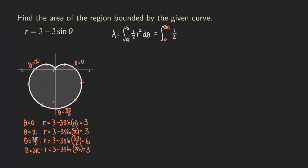We put down one half, and r is replaced by the function 3 minus 3 sine theta, then squared, times d-theta. To integrate this, we cannot directly integrate with the square and the sine function inside — we need to expand this first.